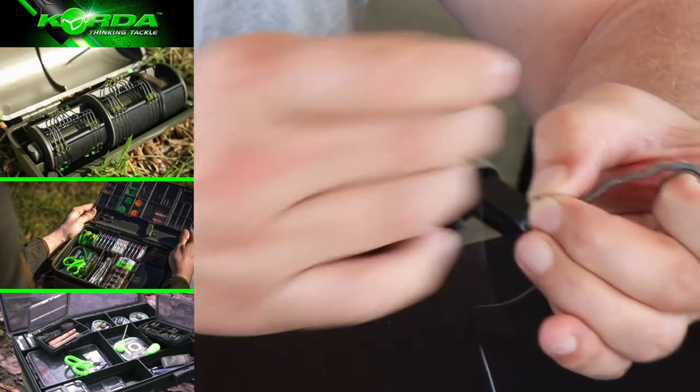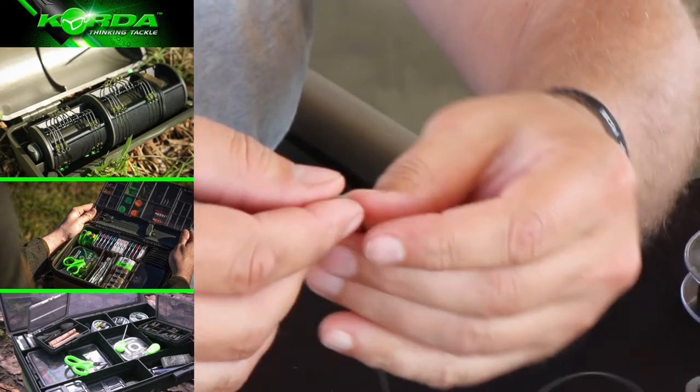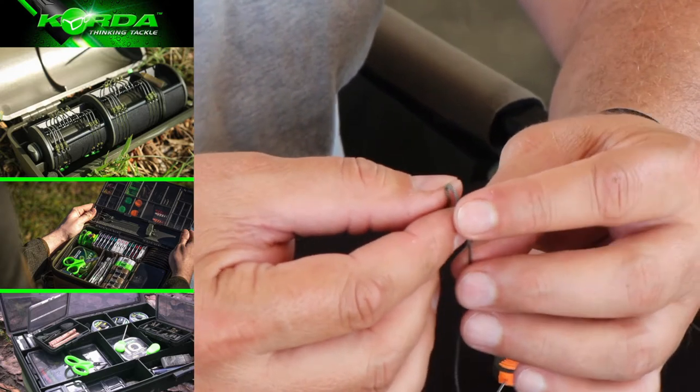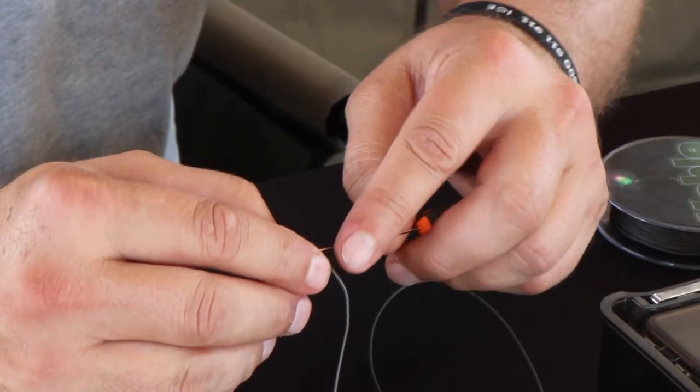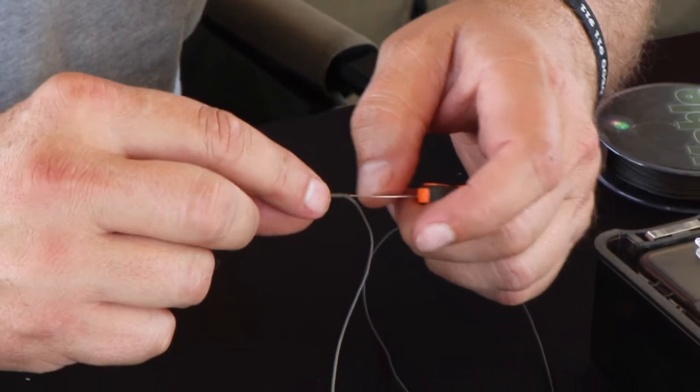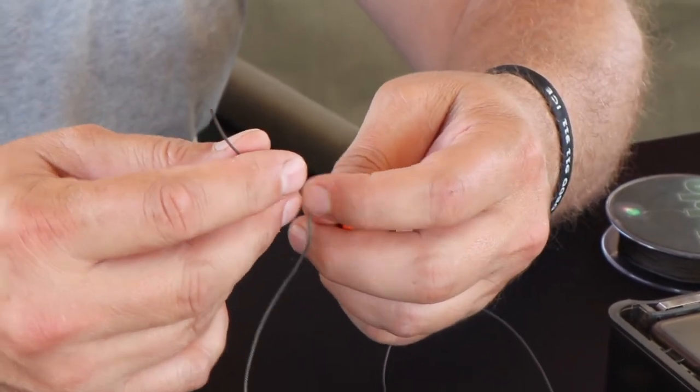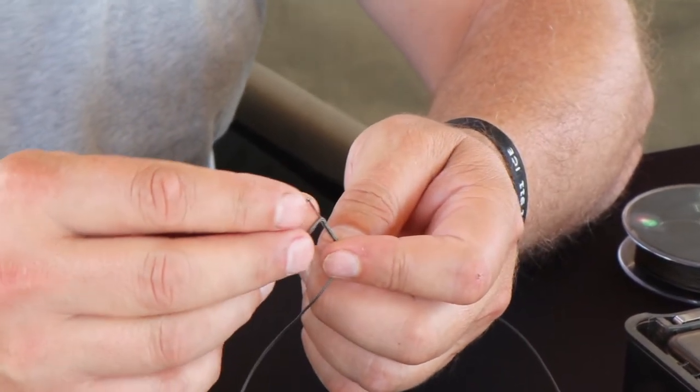Do exactly the same. Just feel where the lead core is inside the braid. I hook it up, push it back just halfway down and out the braid. Then all I do is just hook it up again.